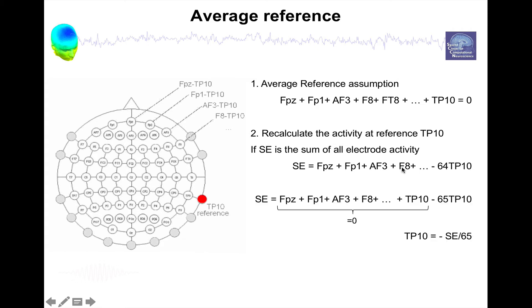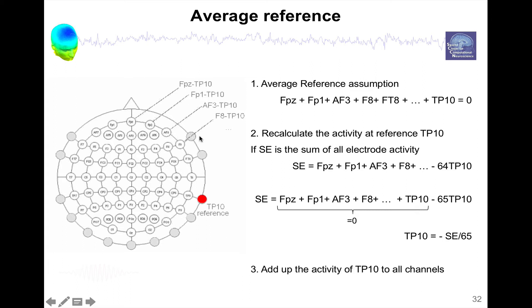If we do a little trick where we add one more TP10 and subtract one more TP10, you can see this is the average reference assumption — we set this equal to zero. Under the average reference assumption the sum of all electrodes is zero, so now we can easily calculate TP10. The activity at TP10 under the average reference assumption is minus the sum of the electrodes divided by the number of channels. Now that we have TP10, to calculate the potential of each channel we simply add TP10 back to the activity of every single channel, and now we have the activity of all channels in the average reference.